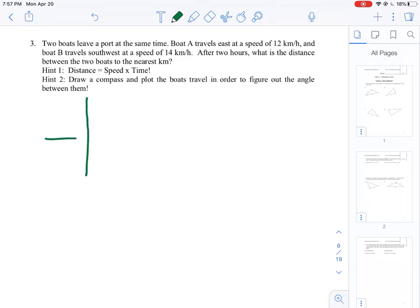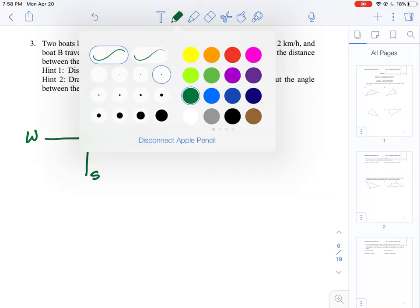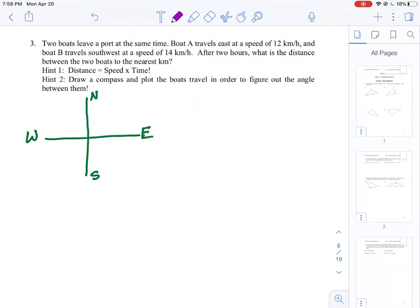We'll start by drawing a grid, an X and Y grid, but we're going to label it north, south, west, and east. We've got to plot where these two boats are, so let's just change color and put boat A.